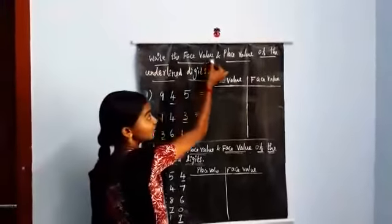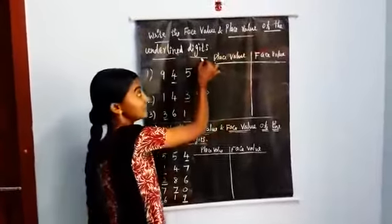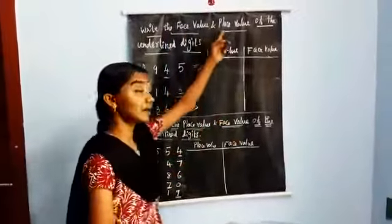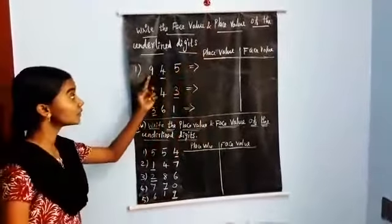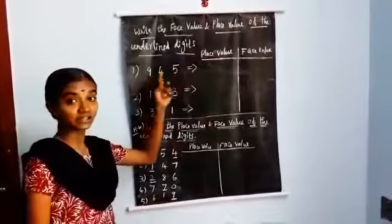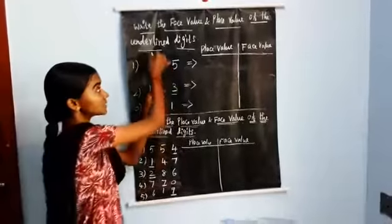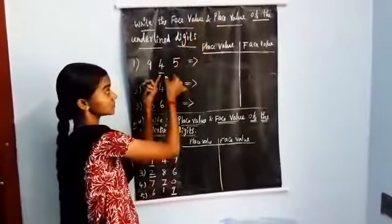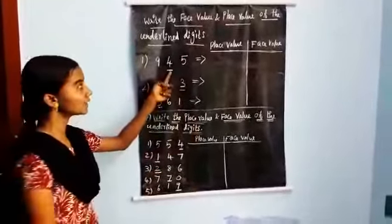Write the face value and place value of the underlined digit. Here, write face value and place value — both we have read. First example: 945. Which one is underlined? Yes, 4 is the underline.